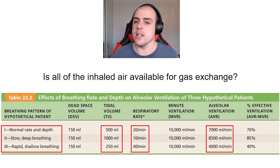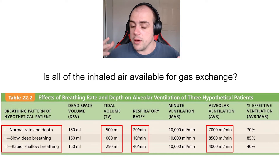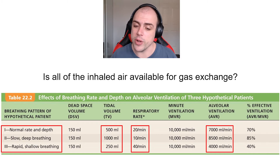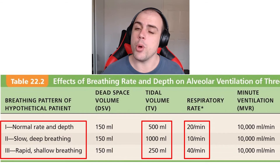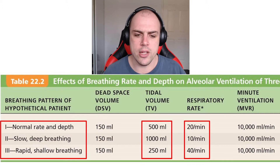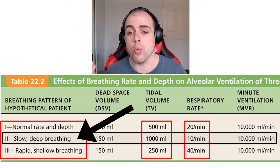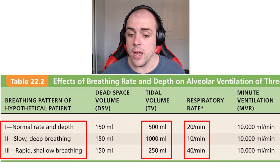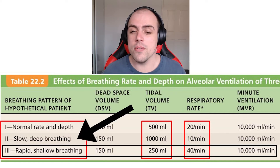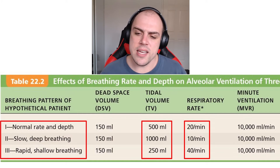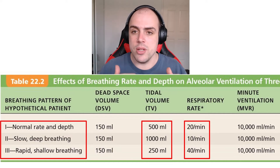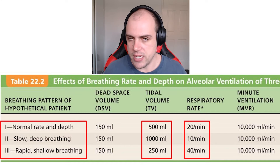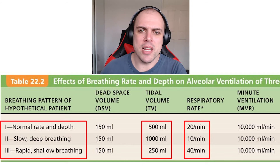Understanding lung volumes allows us to compare different types of breathing. With a normal tidal volume of around 500 mils and a respiratory rate of 20 breaths per minute, we see about 10 liters ventilated per minute. We can compare three types: regular normal breathing, slow deep breathing where the rate is halved but volume doubled, and rapid shallow breathing where tidal volume is halved but respiratory rate is doubled. The minute ventilation rate comes out to 10 liters in all three cases — regardless of how we breathe, if we appropriately adjust rate and volume, we move 10 liters per minute.